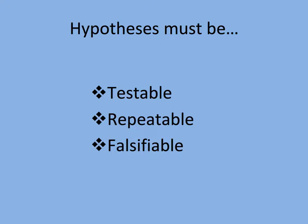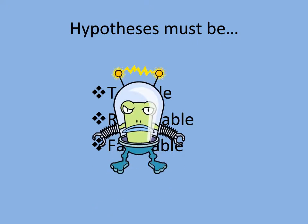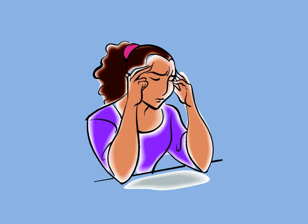Consider the hypothesis: aliens live on a planet a thousand light years from Earth. Can you gather evidence to show that these aliens do not exist? No, because we don't have the technology to do this. The scientific method cannot test this because it is not falsifiable. So, what hypothesis would answer our question about something in ice cream causing headaches, and be testable, repeatable, and falsifiable?